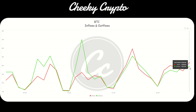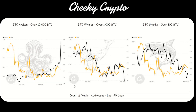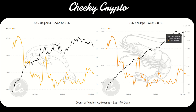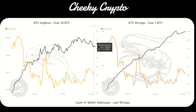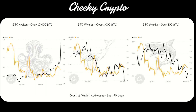43,000 Bitcoin went onto exchanges with only 38,000 coming off the exchanges. We've got a little bit of accumulation on the shark side but nothing too major, and retailers are doing what retailers do best — overreact. The shrimps are buying up everything because they believe the bottom is in and we're going super bullish, whereas dolphins — high net worth individual retailers — are coming out of their positions, very much like your whales and big money.